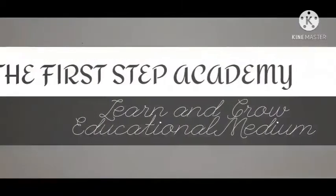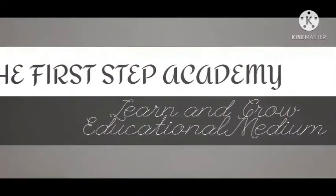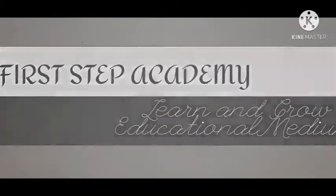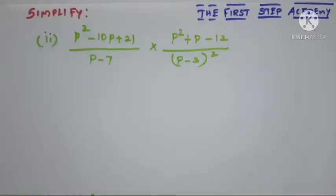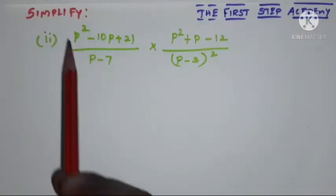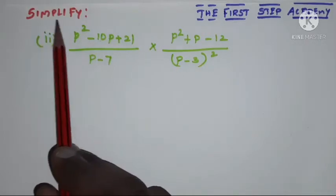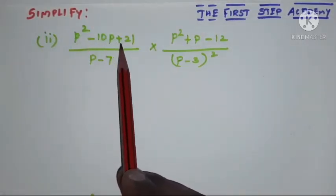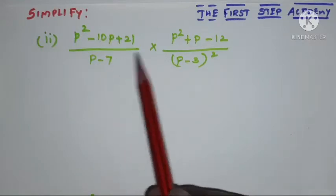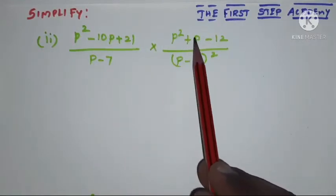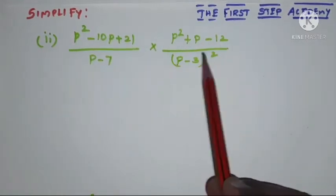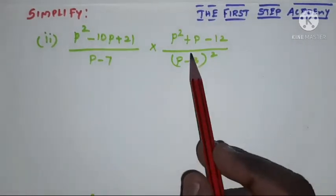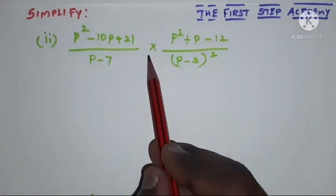Hi, hello, welcome to the First Step Academy Learn and Grow Educational Medium. The problem is: simplify (p squared minus 10p plus 21) divided by (p minus 7), multiplied by (p squared plus p minus 12) divided by (p minus 3) whole squared. This problem is also in product form.